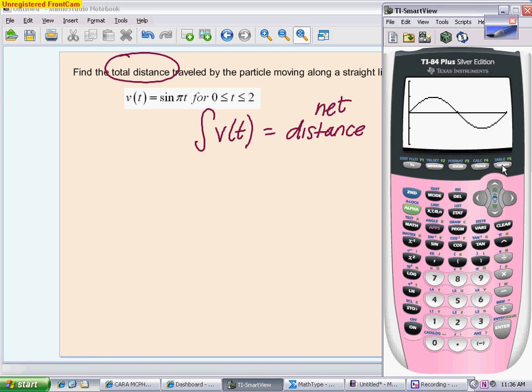So essentially what this particle does is it starts out positive, meaning it's heading towards the right. Then at 1, it changes directions. And now we're heading to the left. Now my guess is if I just integrated sine of pi t from 0 to 2 and didn't take into consideration the change in direction, I'm going to get 0. Because if you'll notice, I have the exact same region. I have that symmetry heading to the right as I do heading to the left.